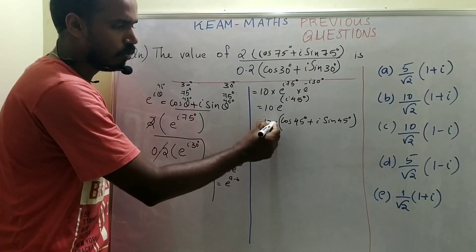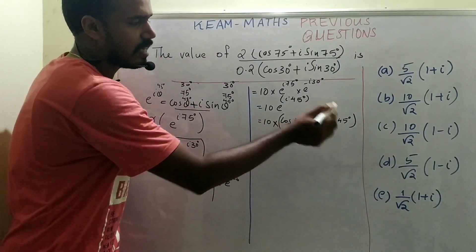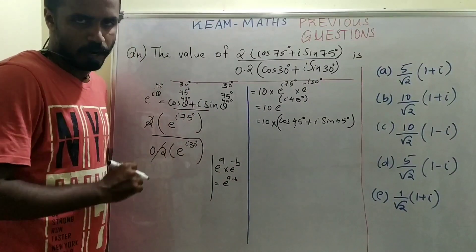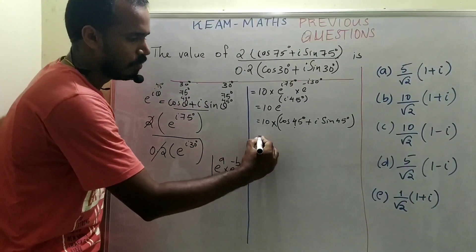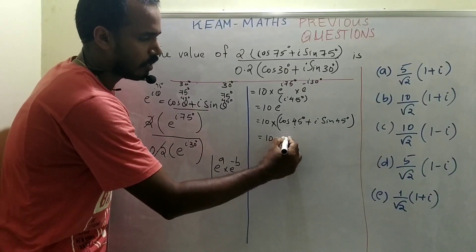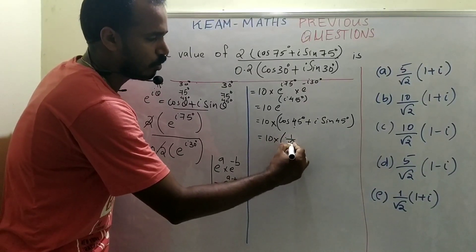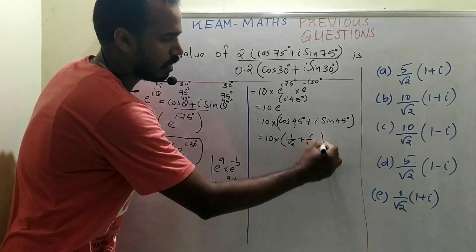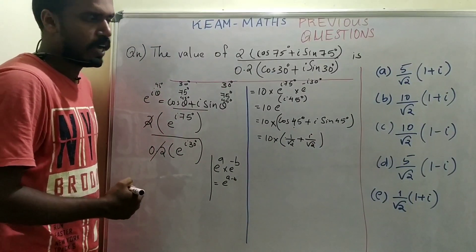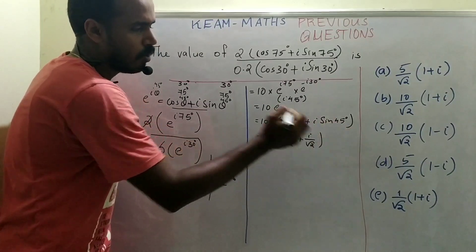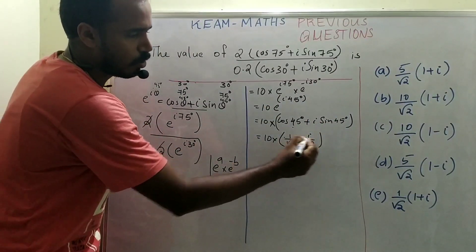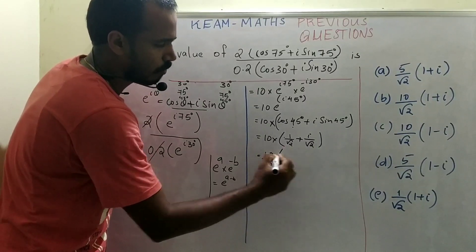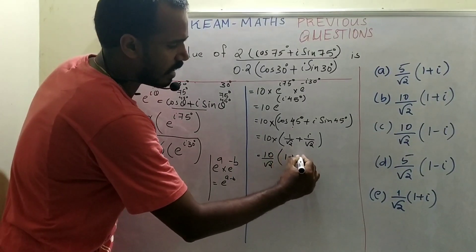10 · (cos45° + i·sin45°). The value of cos45° and sin45° is 1/√2, so this equals 10 · (1/√2 + i/√2) = (10/√2)(1 + i).